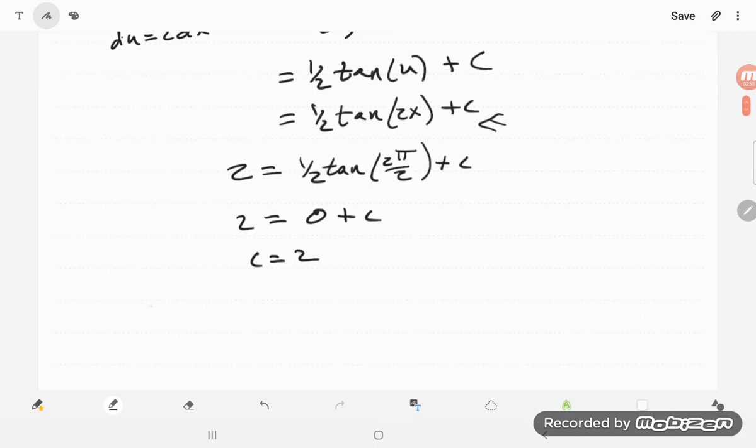So our actual function that we want, f of x, is 1 half tangent of 2x plus 2. And that will give us our particular antiderivative. And that is number 44.